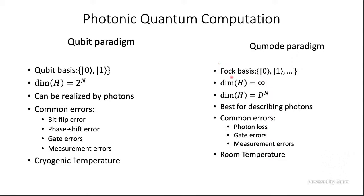In photonic quantum computation we have a Fock basis, meaning each photonic mode has a theoretically infinite number of photon states. In reality there is a cutoff dimension d, and the Hilbert space dimension is d^n where n is the number of photonic modes. The most important error in the photonic architecture is photon loss, along with gate and measurement errors. However, photonic devices typically do not require cryogenic temperatures to operate.